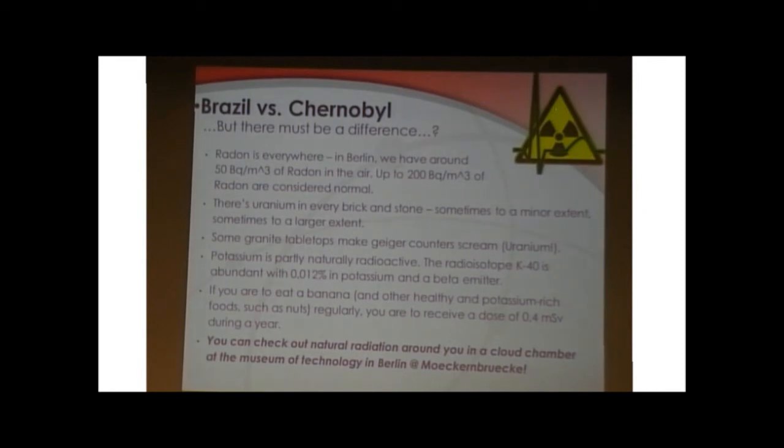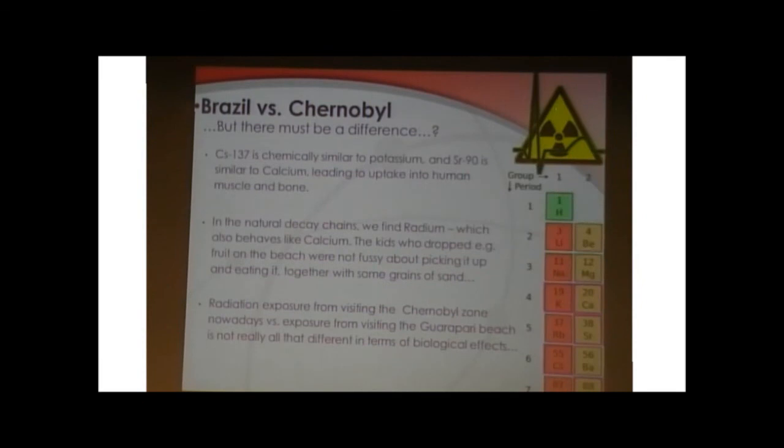In Berlin, we have around 50 Bq per cubic meter of air, so 50 Bq decaying in this much air, so every time you breathe, you can imagine how much of these atoms actually will decay in your lungs. There's uranium in every brick and stone that produces the natural background radiation. There's also the naturally radioactive potassium, potassium-40, which is abundant with 0.012% in natural potassium. And if you eat, for example, nuts or banana or whatever, you get about a dose of 0.4 millisievert during a year just from this natural potassium. And if you want to see more about these natural radiation levels, I suggest that if you have time that you go to the Museum of Technology, which is located at Möckernbrücke, they have a large particle detector, a cloud chamber, where you can see all these tracks of ionizing radiation in a huge chamber, and you can see just how intense these levels of natural radiation around you are. It's very fascinating to see.